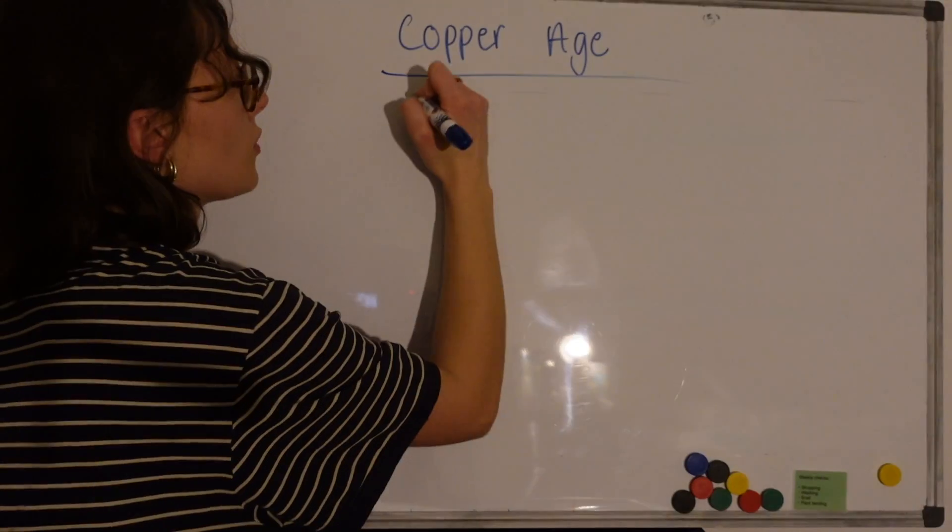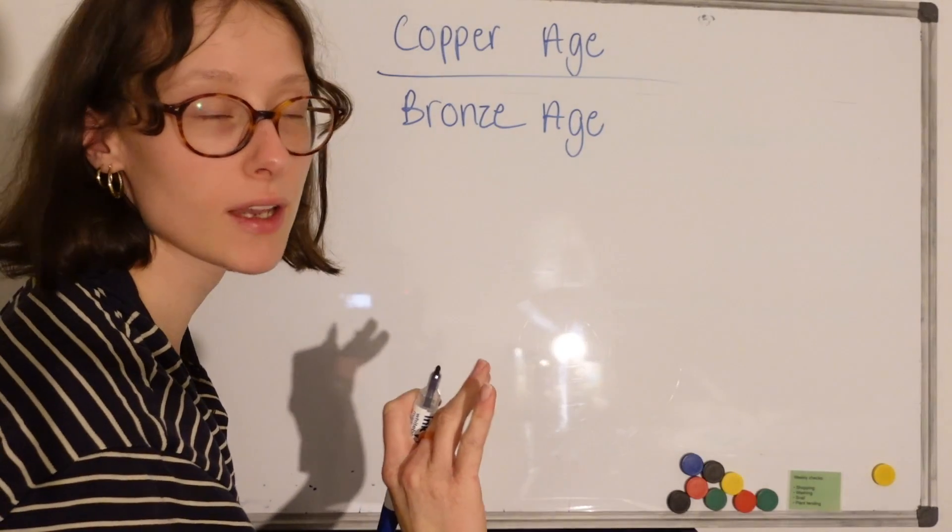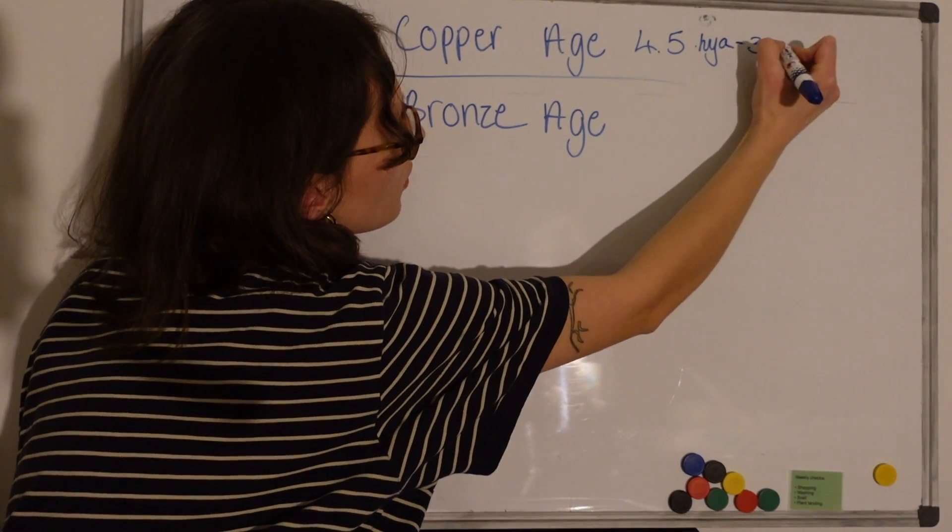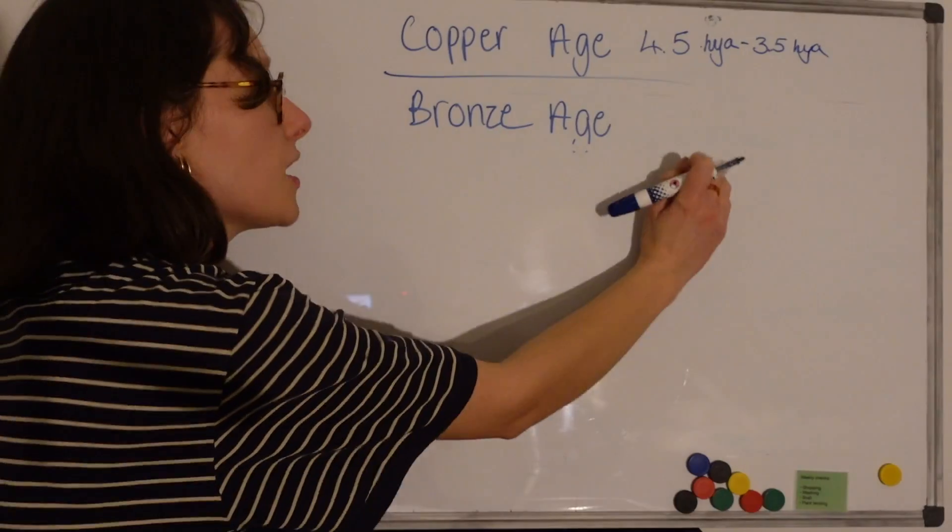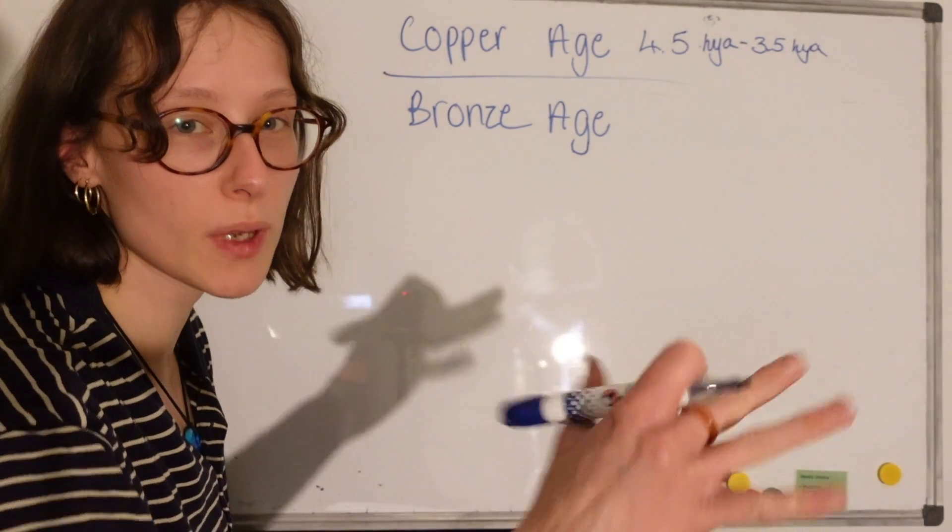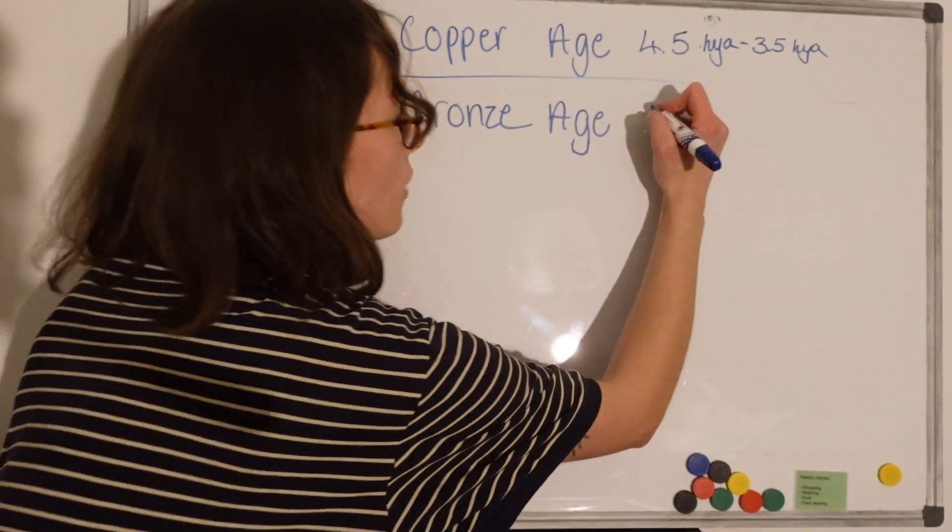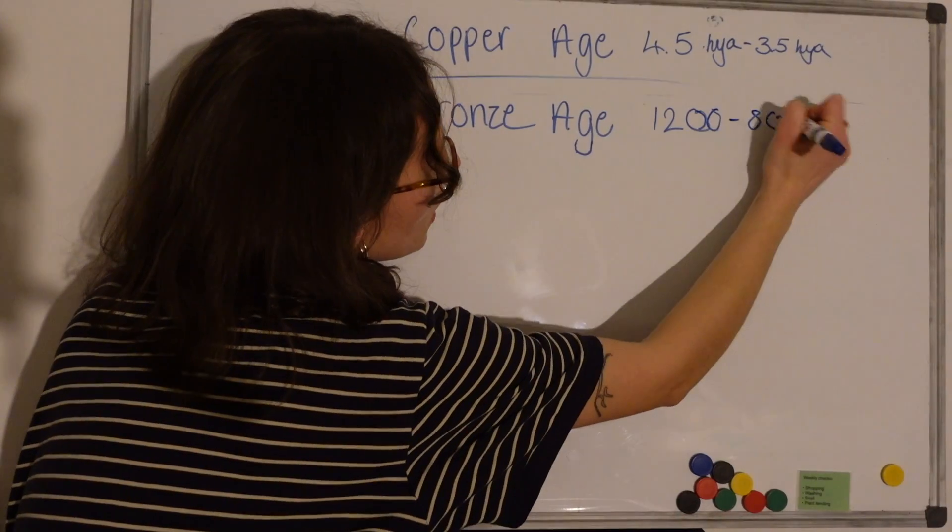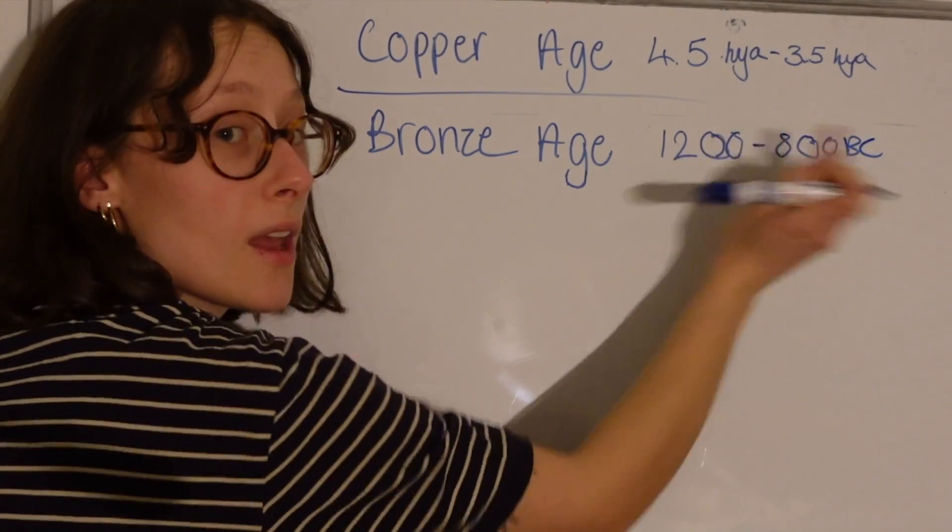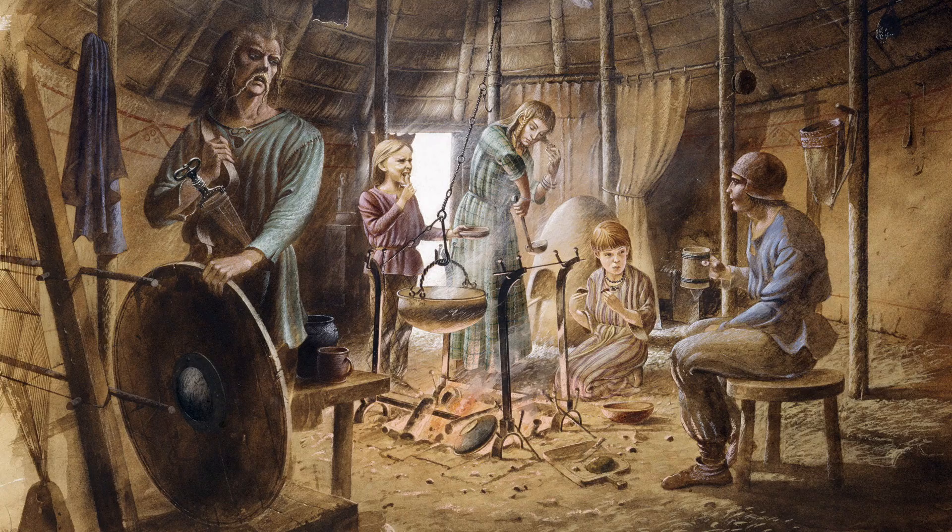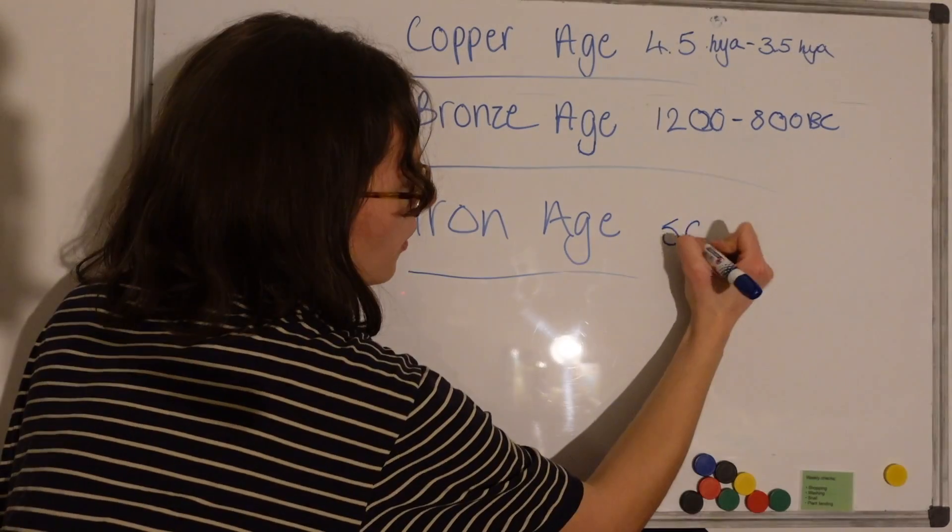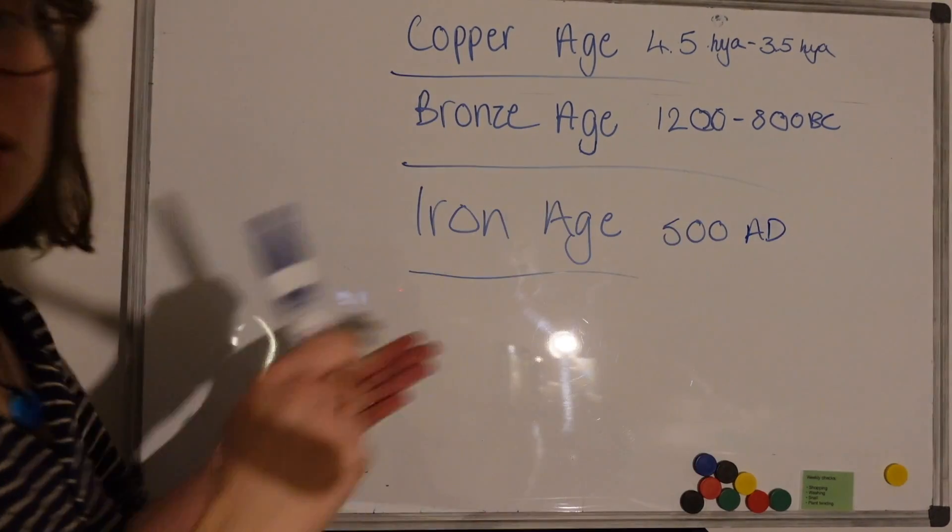Because shortly after we've got the bronze age. For simplicity's sake we'll say about 4.5 thousand years ago to 3,000 years ago. Now this kind of inevitably led to the iron age. Which lasted between, depending on where you are, about 1.2 to 800 between these two when it ended. Then of course, the iron age. And from here on, this went well into about 500 AD. Depending on where you were.